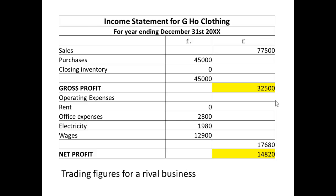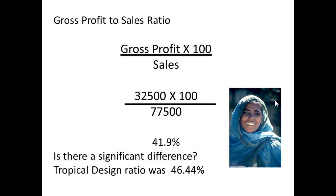The nearest rival we can find for the moment is Jiho Clothing. We can see that they had a gross profit of £32,500 on sales of £77,500. Their gross profit to sales ratio — £32,500 times 100 divided by £77,500 — comes to 41.9%. Tropical Designs' ratio was 46.44%, so it looks as if Tropical Designs are doing slightly better than Jiho Clothing.